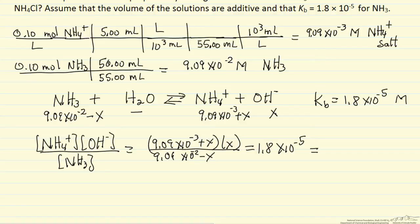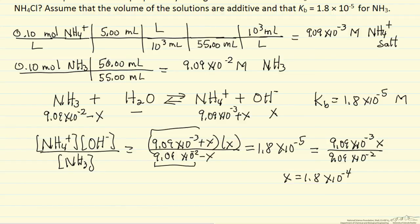Because if we do that, then the numerator, 9.09 times 10 to the minus 3 times x, 9.09 times 10 to the minus 2, this says x is 1.8 times 10 to the minus 4. Well that's a pretty good approximation, significantly less than 1% error relative to 9.09 times 10 to the minus 2. It's not such a good assumption here.